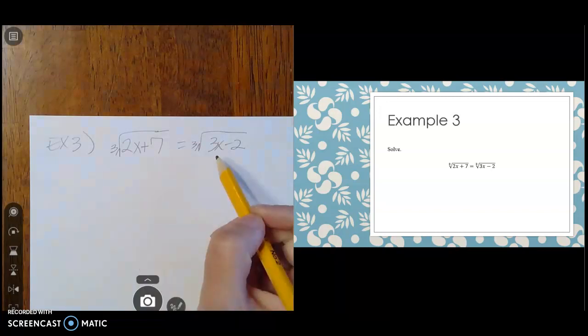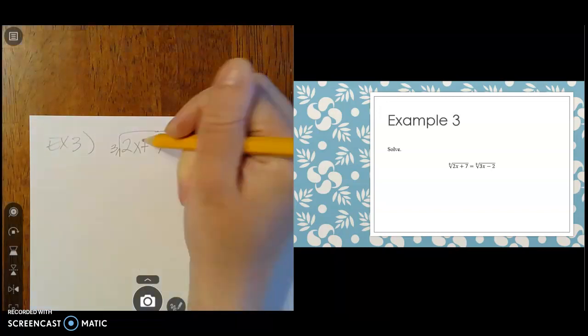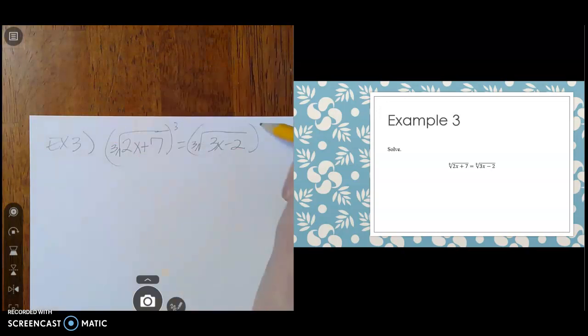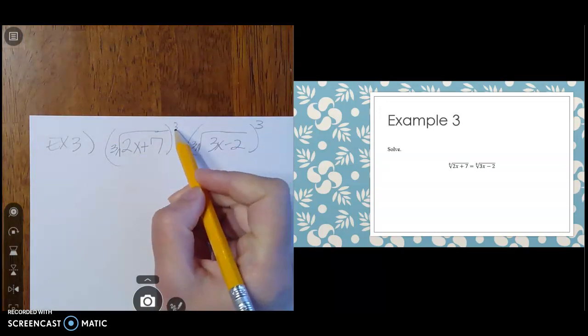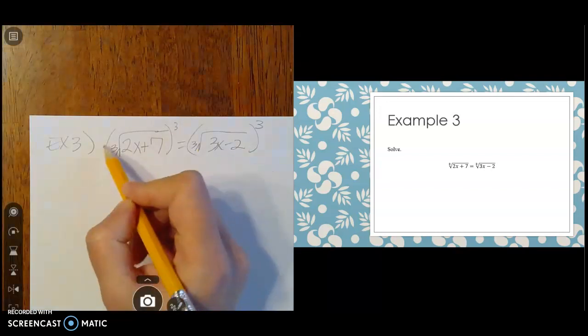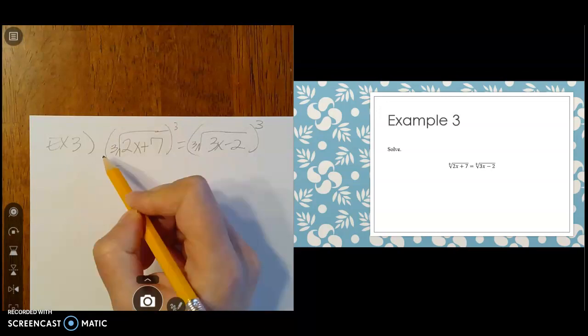because both cube roots are already by themselves. The opposite of cube rooting is cubing, raising it to the third power. That third power, the exponent of 3, and that cube root are just going to undo each other.